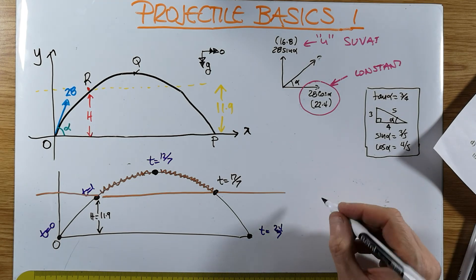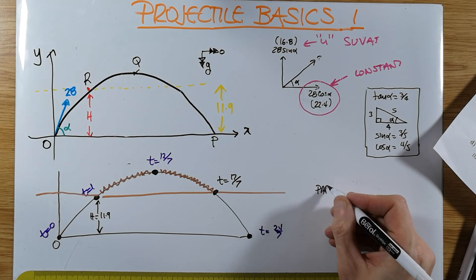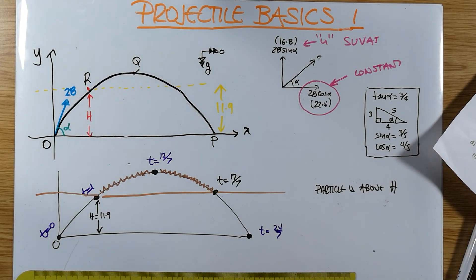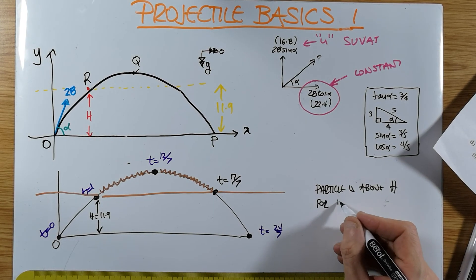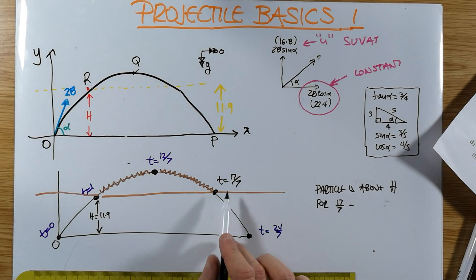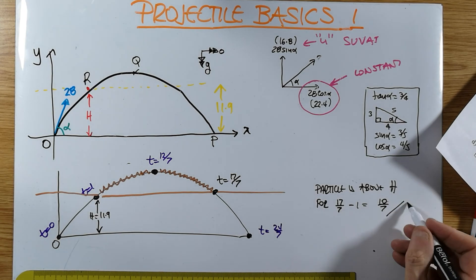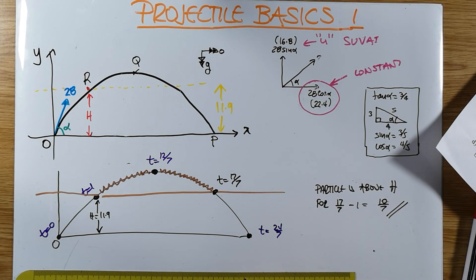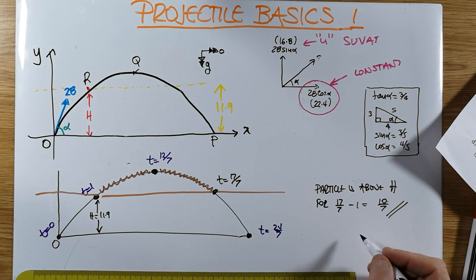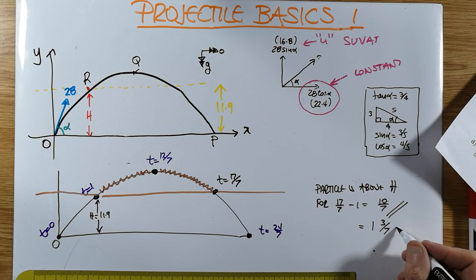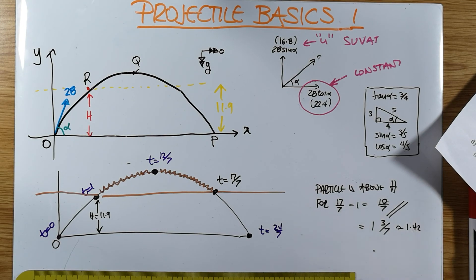So the particle is above this height, the difference between those two times. So the required answer from this picture is very simple. Particle is above H at a height greater than H for 17 over 7 take away 1. And that is in fact 10 sevenths of a second. You can of course give a decimal approximation. It's 1 and 3 sevenths, approximately 1.43 if you decimalise it.